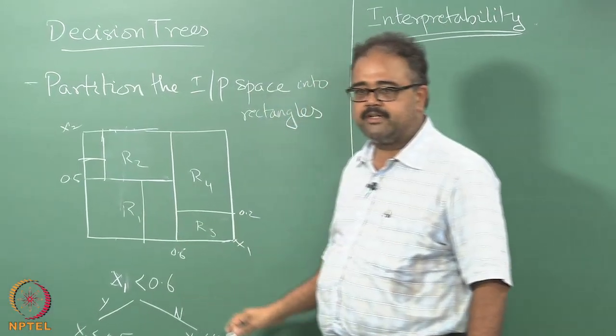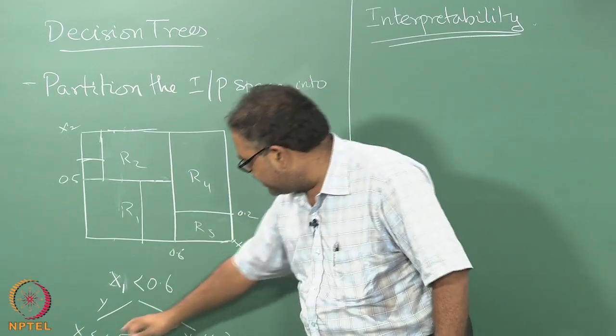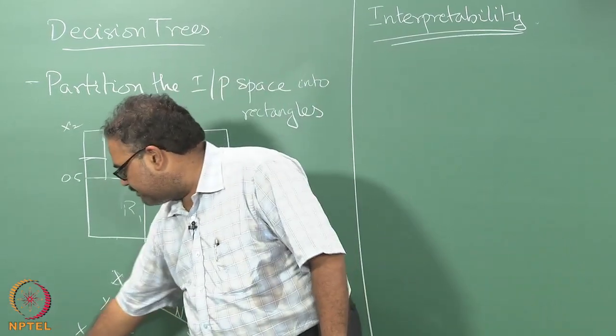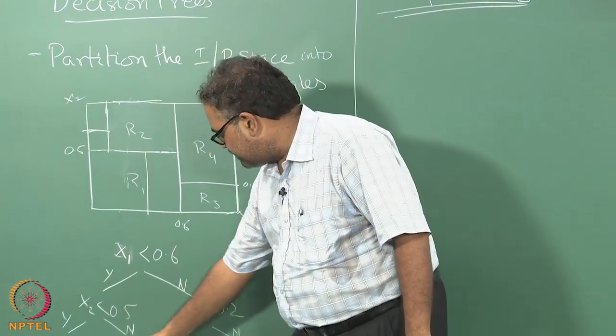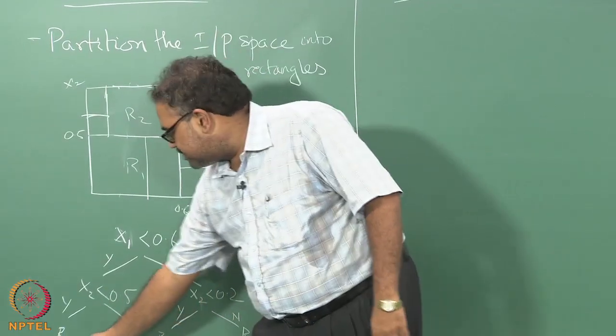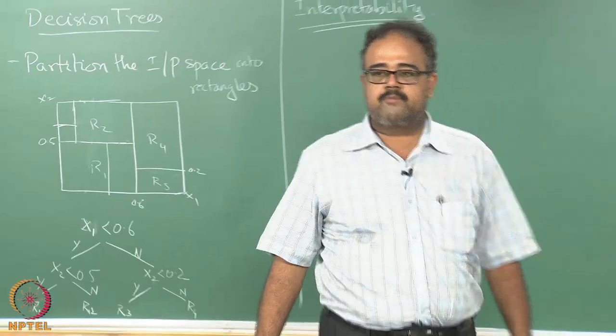Now this becomes a much more complex tree. Now I have, I'm splitting here once more. I will have another branch here, I will have another branch here, and another branch somewhere there. So it keeps becoming more and more complex.